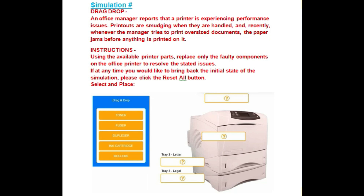So let's go to the instructions for the simulation. Using the available printer parts, replace the faulty components on the office printer to resolve the stated issues. If at any time you would like to bring back the initial state of the simulation, please click the Reset All button and all the settings will be reset.